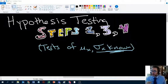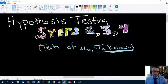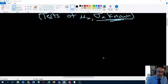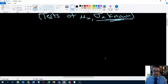And then we're going to have a whole separate video just on step five because I think that it warrants that and I want to give it that kind of attention. But steps two, three, and four usually they move along pretty briskly. Tests of mu sigma known is where we're starting, and this is the easiest place to begin.